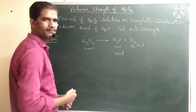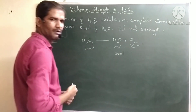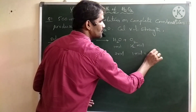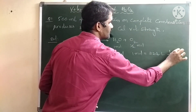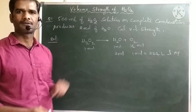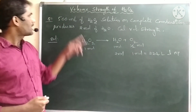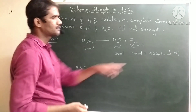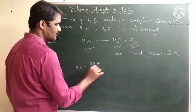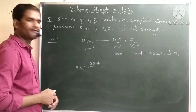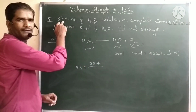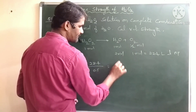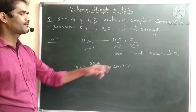According to stoichiometry, if H2O2 produces 2 moles of H2O, then 1 mole of oxygen is produced. 1 mole of O2 = 22.4 liters at STP. Now, volume strength = volume of oxygen liberated / volume of H2O2. Volume of O2 = 22.4 liters; volume of H2O2 = 500 mL = 0.5 liters. So volume strength = 22.4 / 0.5 = 44.8V.